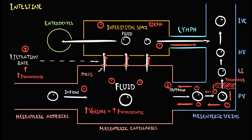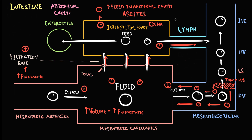From the interstitium, fluid leaves intestinal tissue and enters the abdominal cavity. Accumulation of fluid in the abdominal cavity is called ascites.